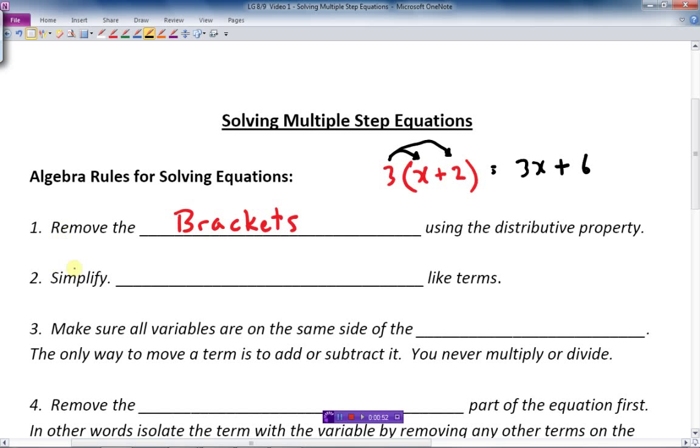Second rule, simplify by combining, in other words adding or subtracting the like terms on each side of the equal sign in the equation. So that's pretty straightforward.